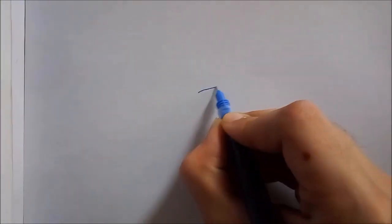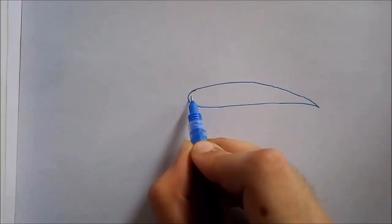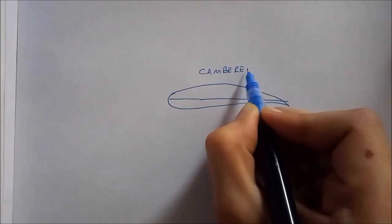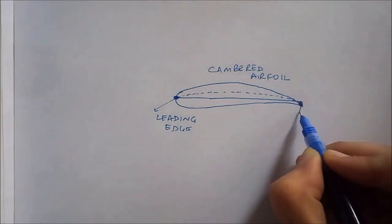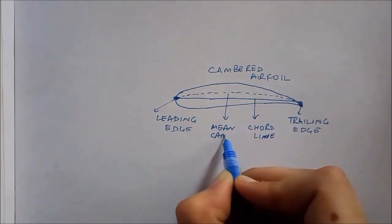Now, coming to the cambered airfoil, it does not have similar upper and lower surfaces and has a greater curvature on the upper part. So the mean camber line and the chord line are separated by some distance and maximum distance between these is called camber.